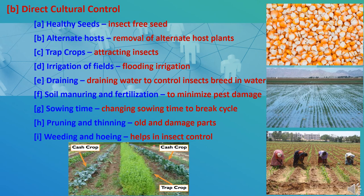The second method of cultural control is direct cultural control, which consists of different important methods. First is using healthy seeds — healthy and insect-free seeds should be preferred to avoid insect problems later. Second is removing alternate host plants from the field and surroundings. Third is trap crops — minor crops of low economic importance that attract insects of the main crop should be grown near the major crop. These trap crops may be treated with insecticide to kill accumulated insects. For example, if okra is grown in cotton fields, it will attract pests. Fourth is irrigation of fields — flooding helps in reducing the population of termites and different stages of other insects.